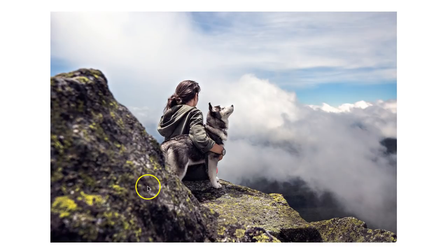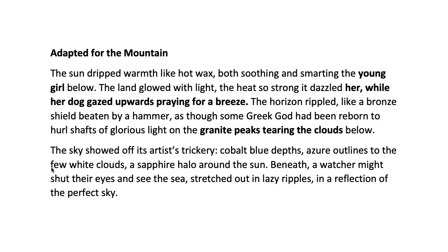Which is a fair point. So now I'm going to show you how to adapt it to this picture where it's not necessarily particularly sunny, it is a totally different landscape, and I've only got one person and the dog instead of a whole plethora of people. Actually, this one was even easier to adapt — I've only made changes to the first paragraph. Here I had the sunlight smarting the young girl below. And then it dazzled her, and I've had to include the dog: while her dog gazed upwards praying for a breeze.